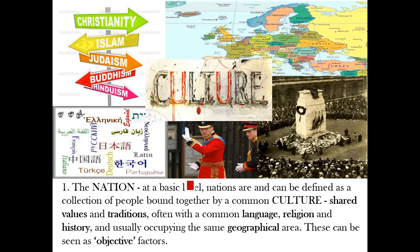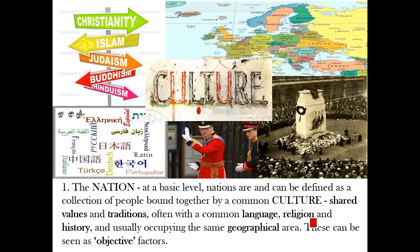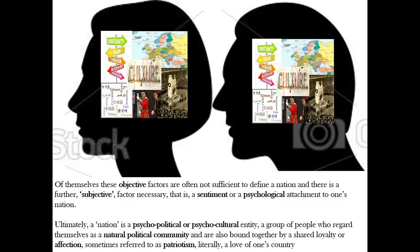The first core theme is the nation. At a basic level, nations can be defined as a collection of people bound together by a common culture, which in its broadest sense could include shared values and traditions, often with a common language or religion, common history, and they usually occupy the same geographical area. These can be seen as the objective factors — things you can point to — but by themselves they are not enough to define a nation, because many nations might have a common language, but some will have several languages, some a dominant religion, some several religions, or none at all.